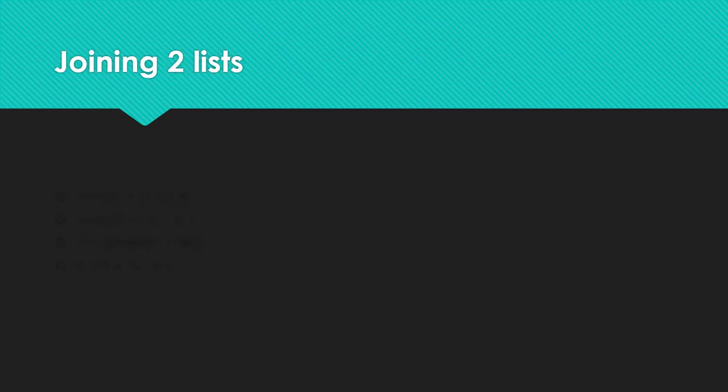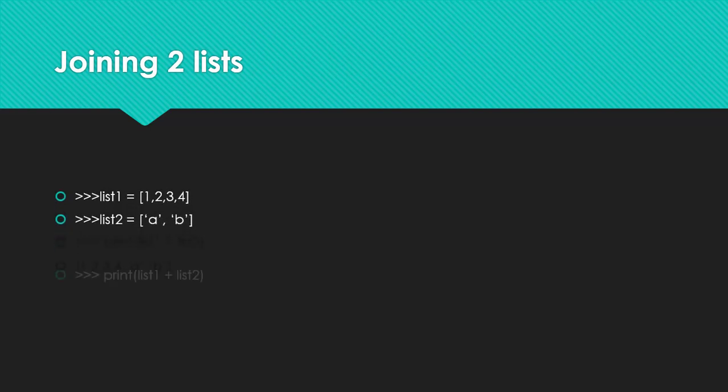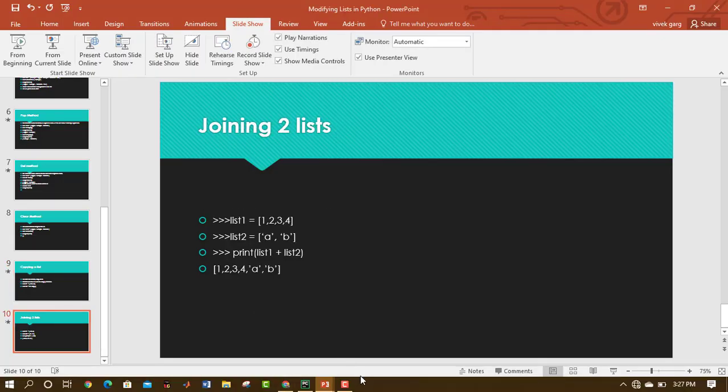To join two lists, simply use the plus operator. For example, if lst1 = [1,2,3,4] and lst2 = [A,B], then lst1 + lst2 produces the joined list [1,2,3,4,A,B]. Joining lists is similar to string concatenation.